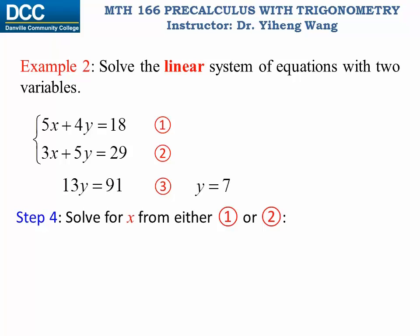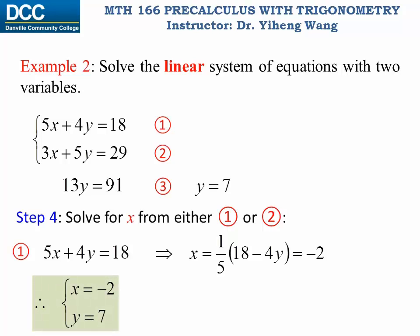And now I can solve for x from either equation one or two. Let me pick equation one. From equation one, because y equals 7, and 5x plus 4y equals 18, I can solve for x to be negative 2. And this pair of values for x and y is the solution to this system, solved using the method of elimination.